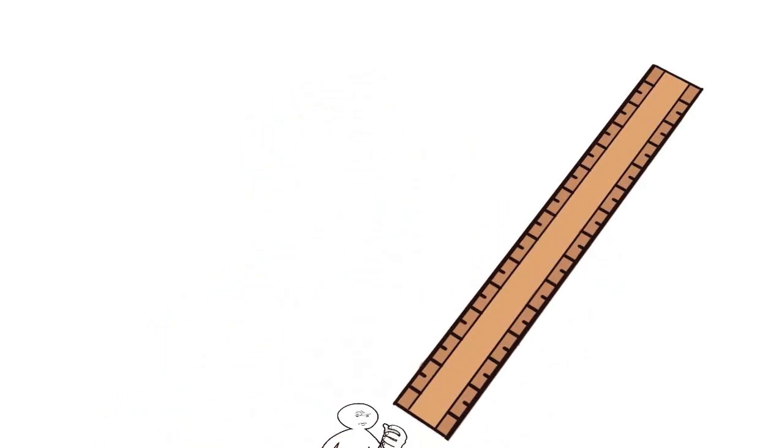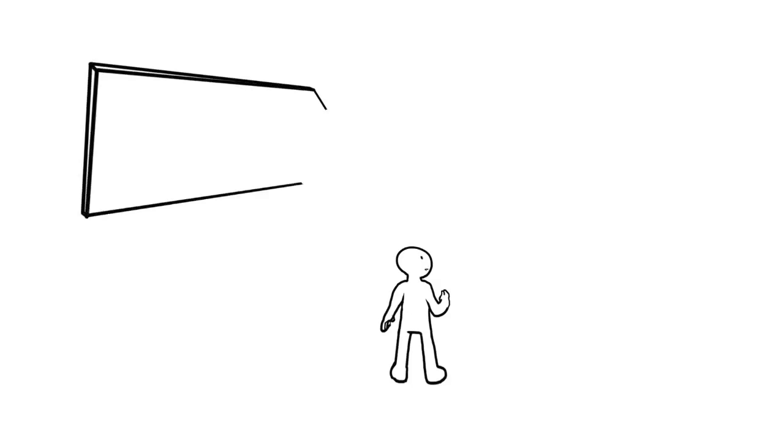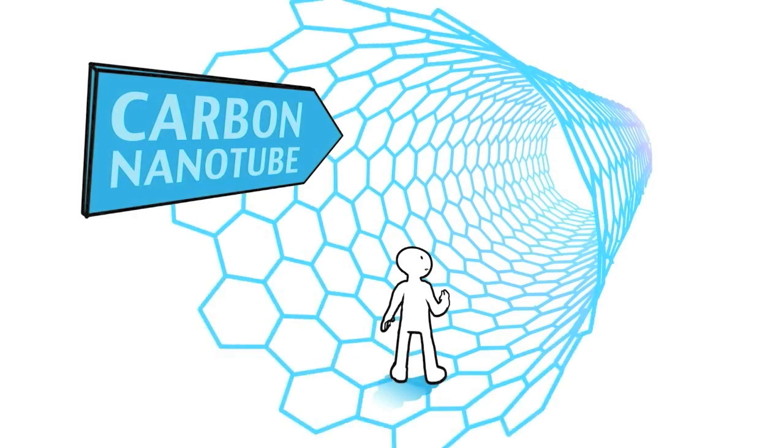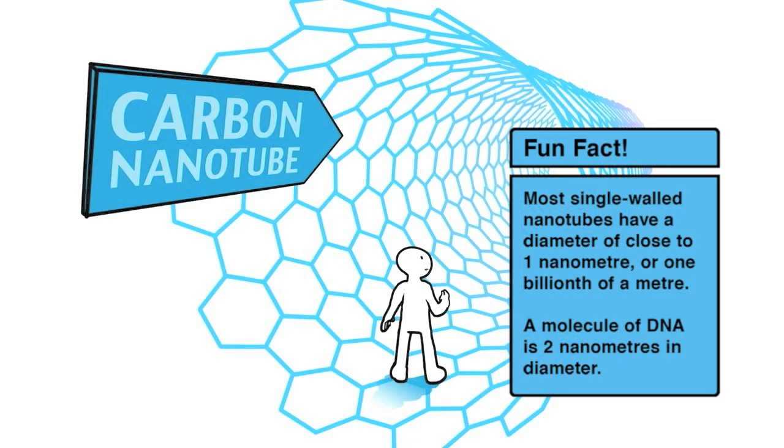In this amazing nanoworld, atoms and molecules can be turned into tiny building blocks called manufactured nanomaterials. The unique properties of nanomaterials have a whole range of applications in manufacturing, commerce, agriculture and medicine.